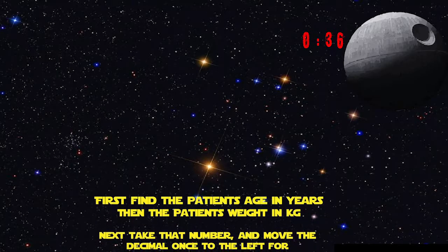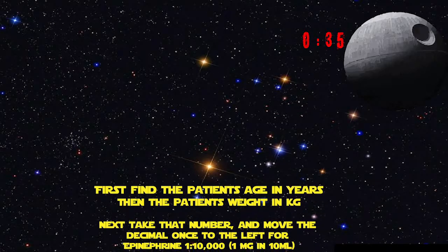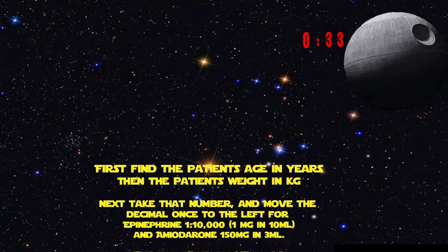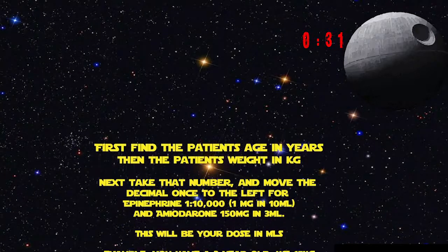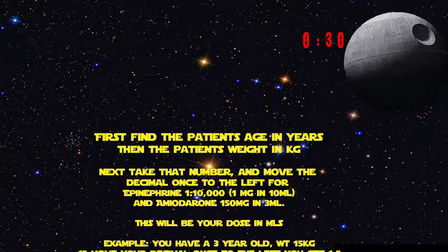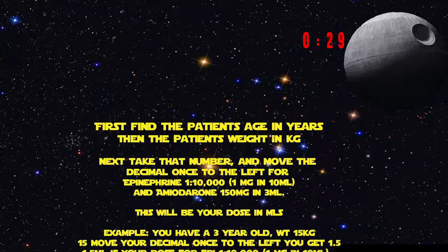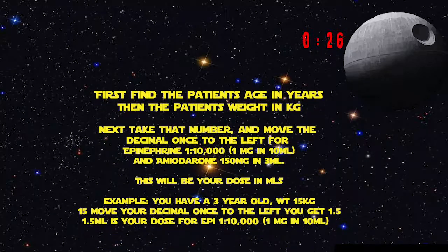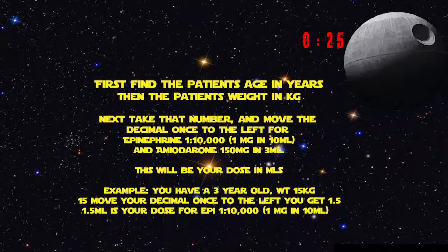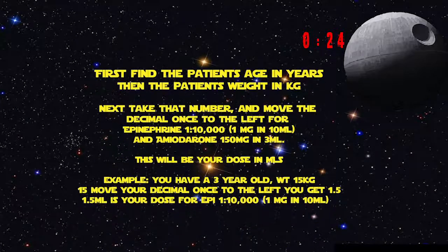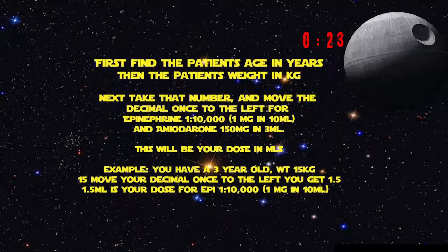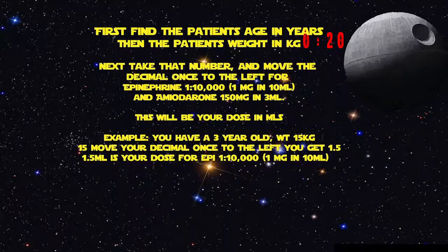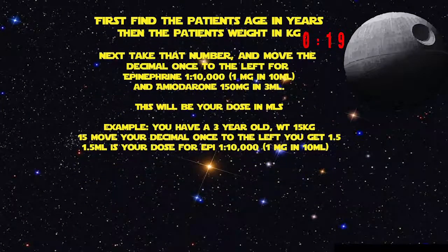First find the patient's age in years, then the patient's weight in kilograms. Next, move the decimal once to the left for epinephrine 1-to-10,000 — 1 milligram in 10mL — and amiodarone 150mg in 3mL. This will be your dose in mils.